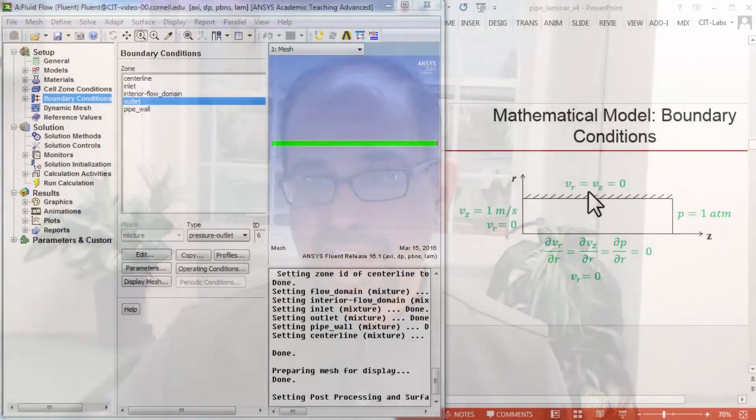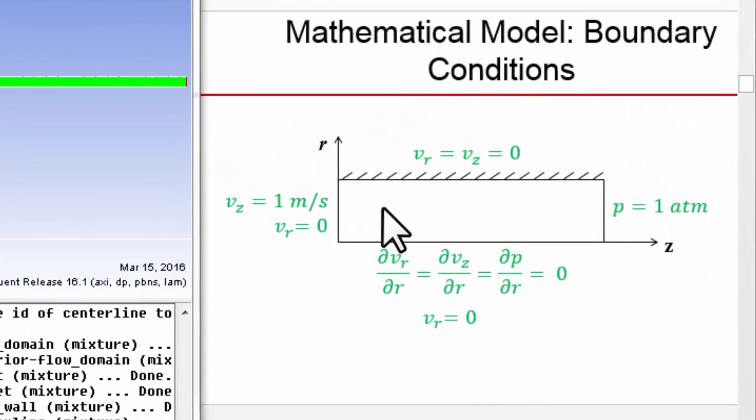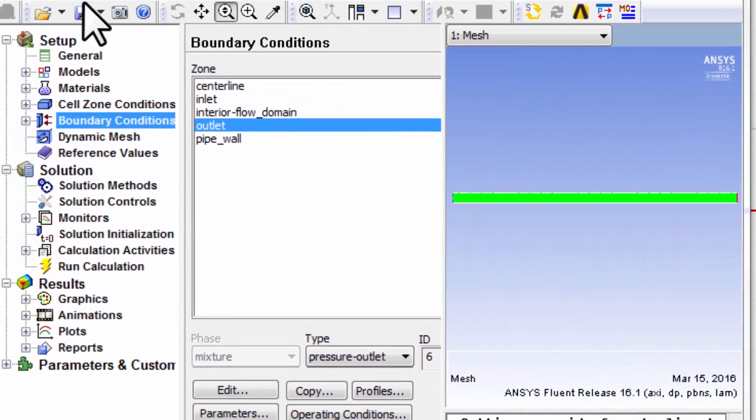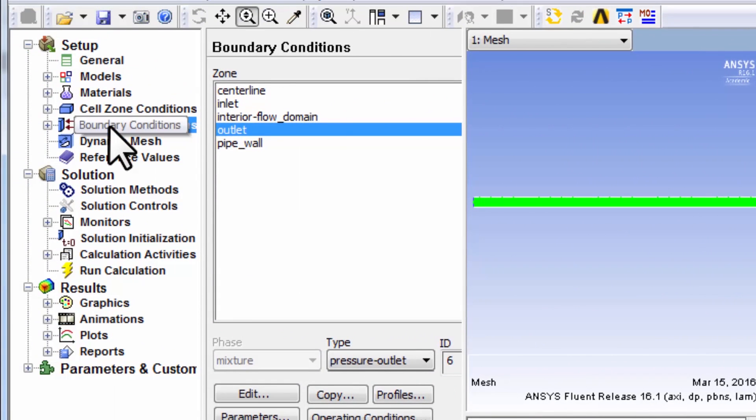Let's define the boundary conditions. For that I'll go back to the boundary conditions from the pre-analysis so I'll refer to this graphic as we are setting the boundary conditions in the solver. Let's start with the inlet. We need to specify the velocity at the inlet, so highlight boundary conditions.